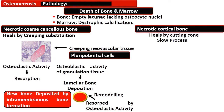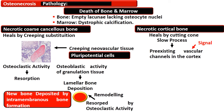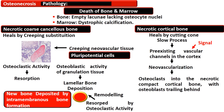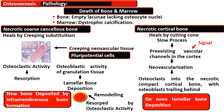The necrotic cortical bone heals by the cutting cone process when there is a significant stimulus for vascular channels. In the cortical vascular channels, new vascularization forms, carrying growth factors and pluripotent cells. Osteoclasts advance into the necrotic compact cortical bone, with osteoblasts trailing behind them. Because this is a slow process, there is de novo lamellar bone deposition.